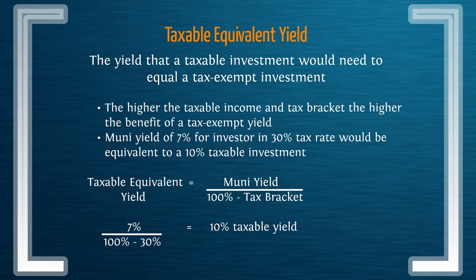For certain tax exempt investors, there's no benefit. They would take the 10% or even a 7.5% taxable investment since they don't pay any taxes anyway — this might be a charity or a foundation. But for the rest of us that pay taxes, we want to be able to compare apples to apples when looking at investments and comparing what the yields on a Muni would be compared to any other type of investment.